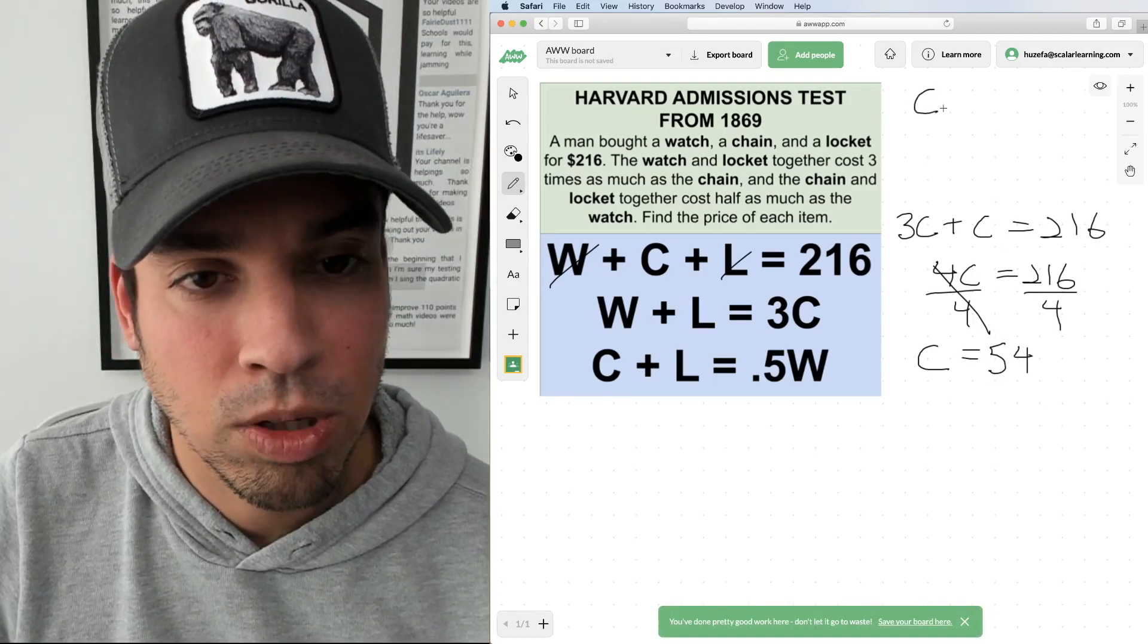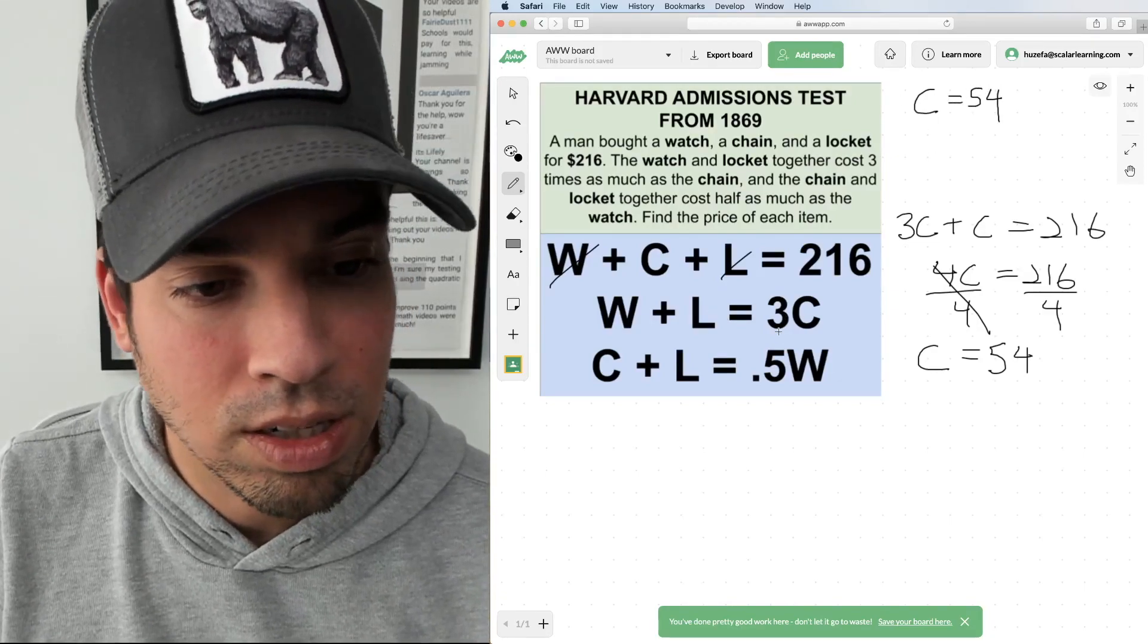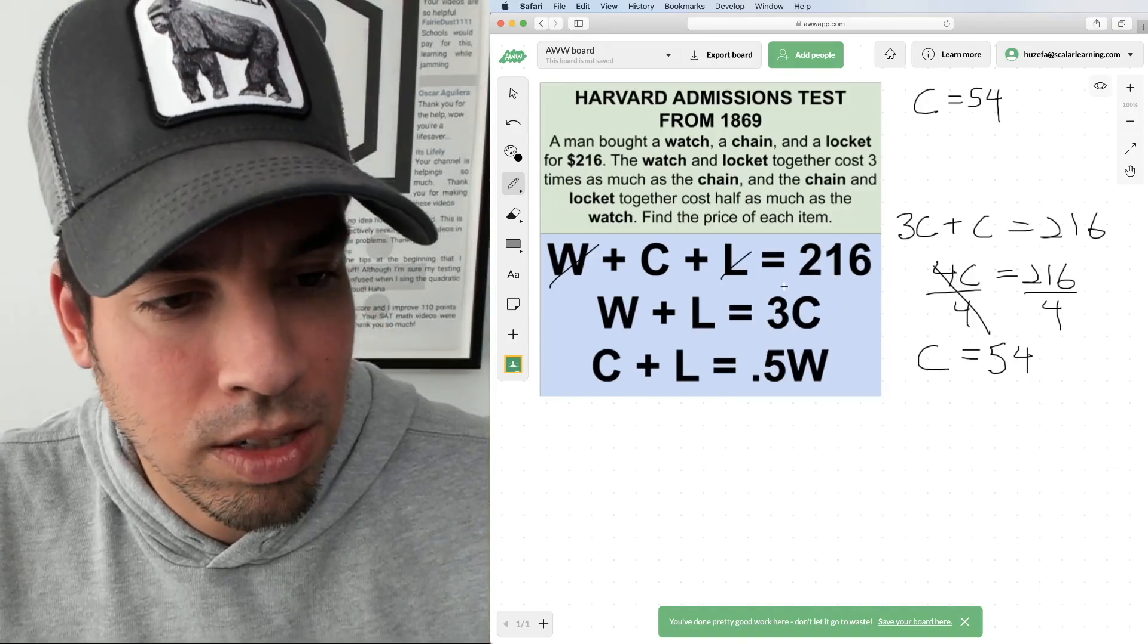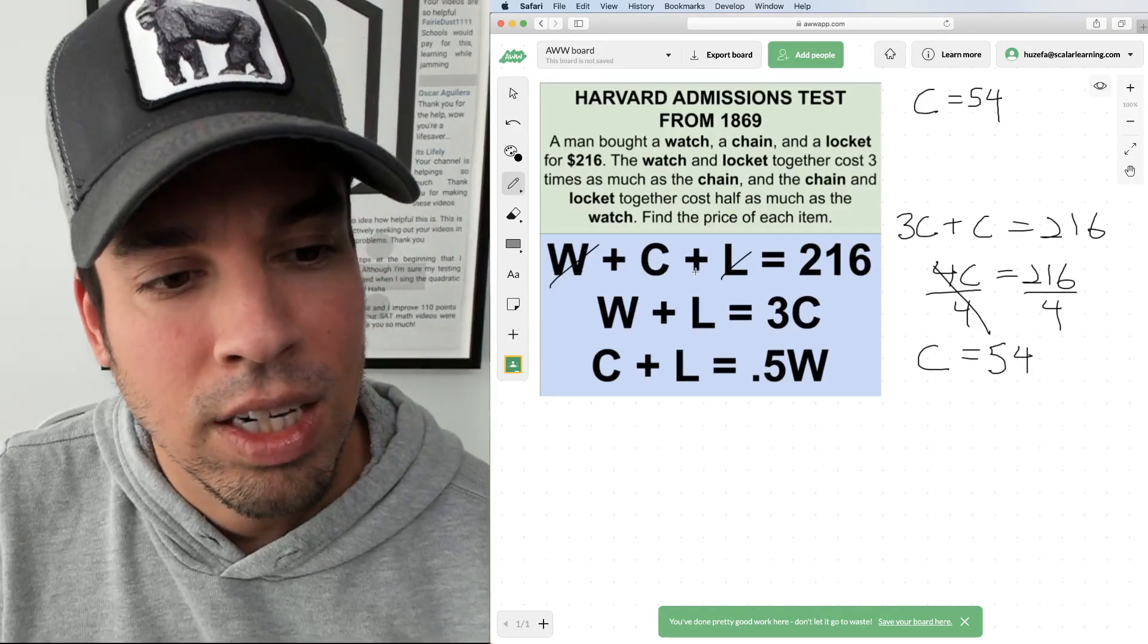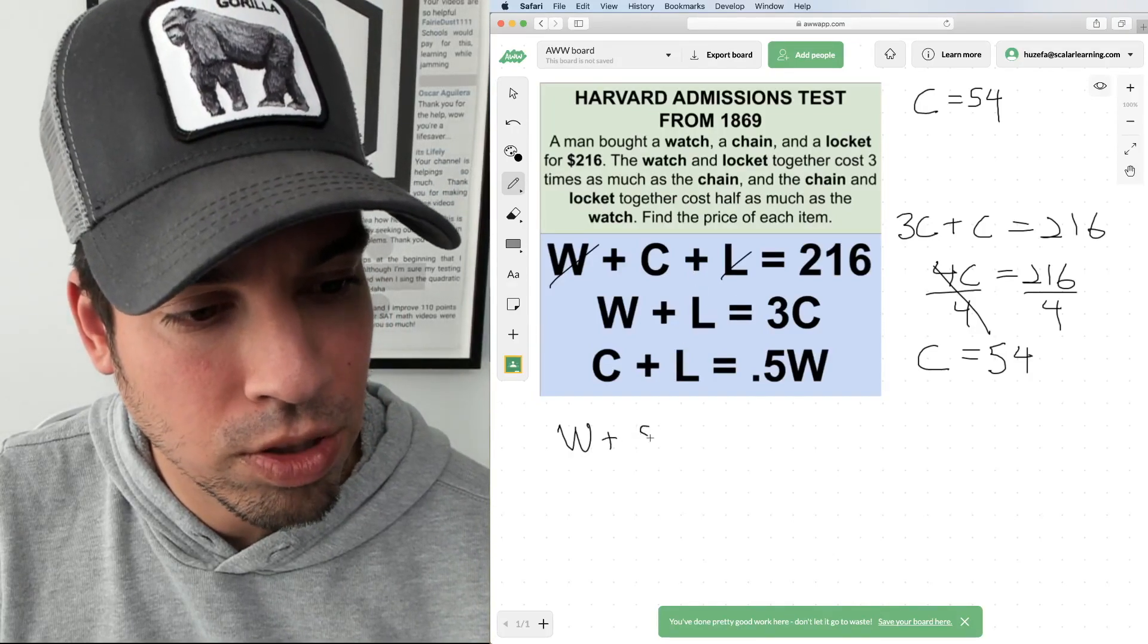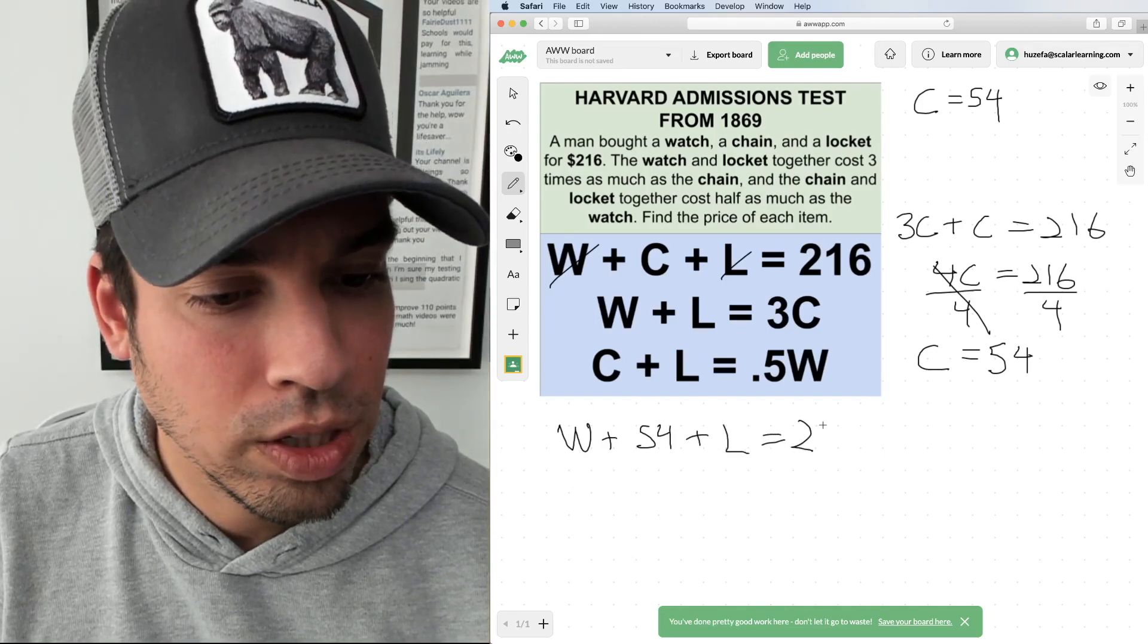So we've gotten one part done. C equals 54, that's pretty good. Now we want to figure out these other items. Since I know the cost of the chain is 54, I can rewrite that top equation as W plus 54 plus L equals 216.